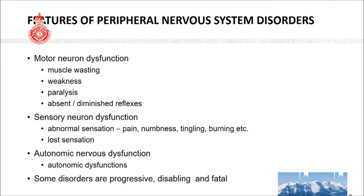If you look at the features of peripheral nervous system disorders: in motor neuron dysfunction you will see muscle wasting, weakness or paralysis, and absent or diminished reflexes. In sensory neuron dysfunction there can be abnormal sensation like pain, numbness, tingling, and burning, or lost sensation. In autonomic nervous dysfunction there can be postural hypotension, gastroparesis, and various other autonomic dysfunctions.